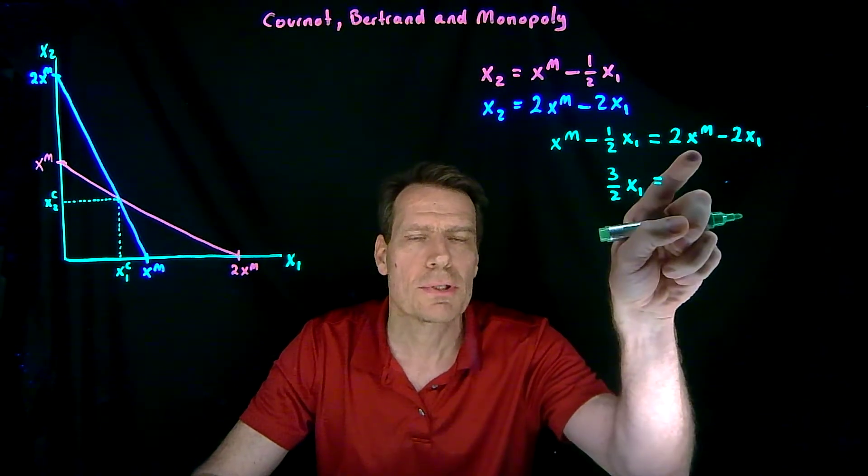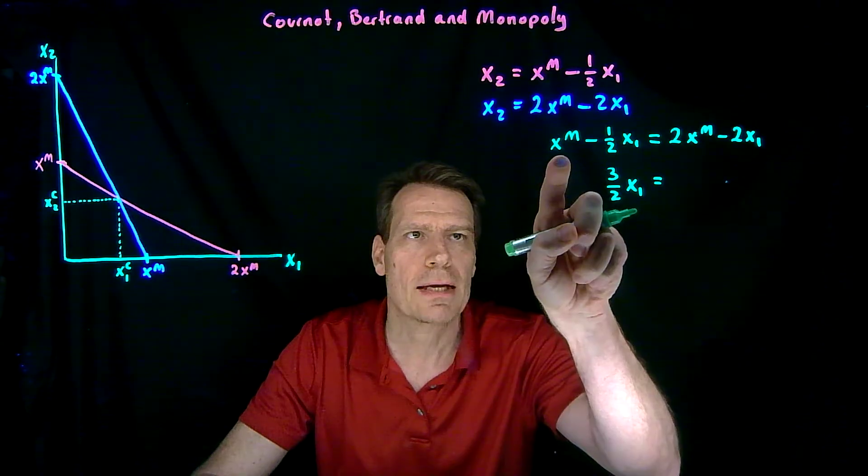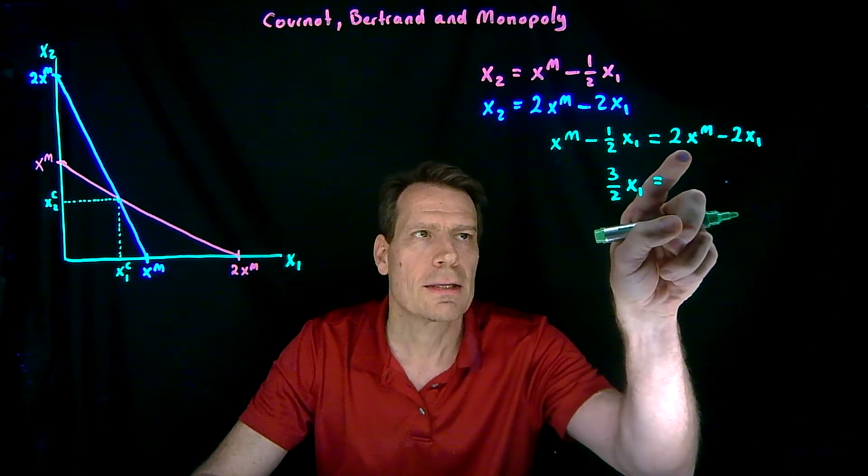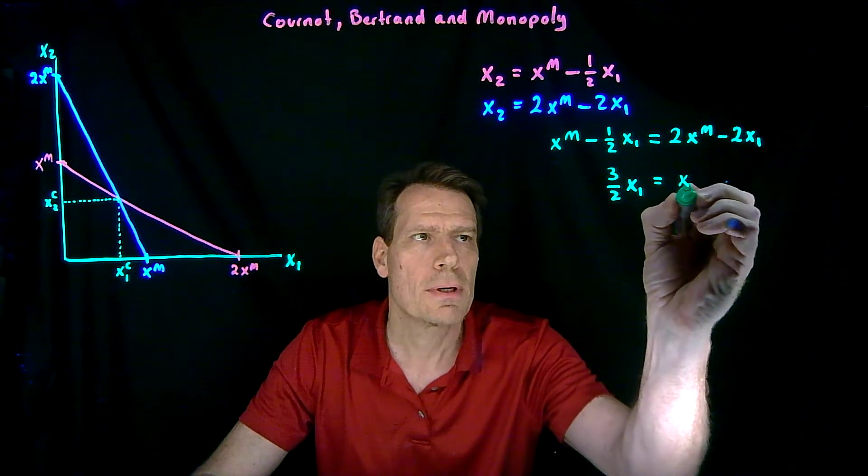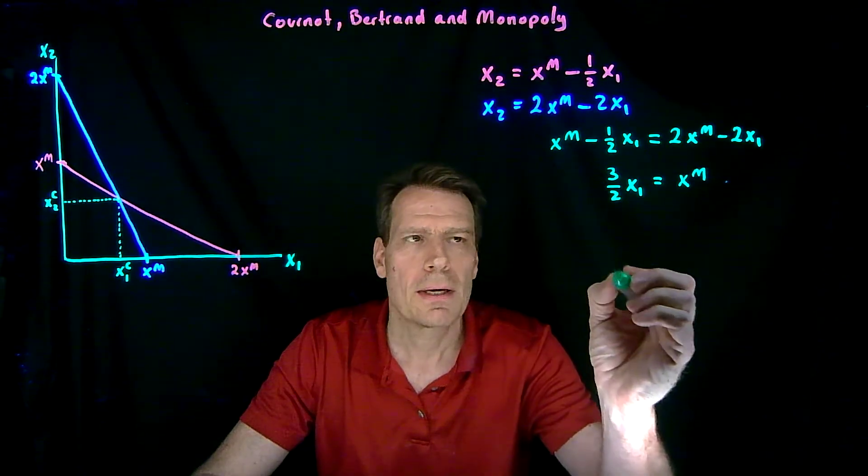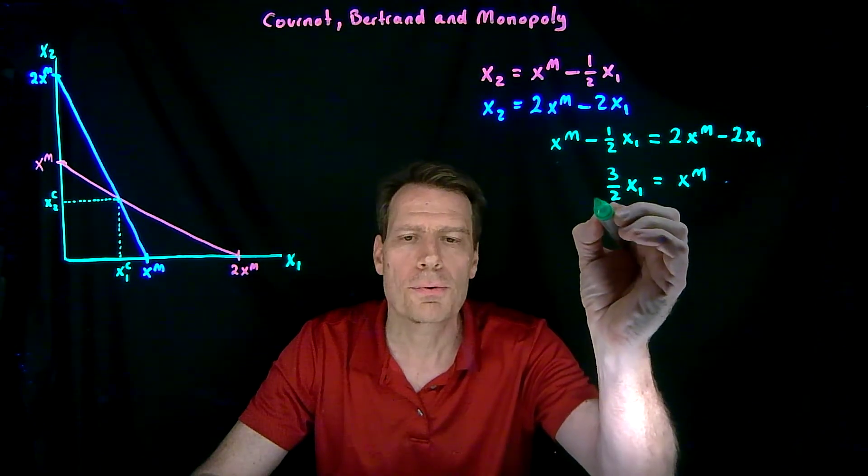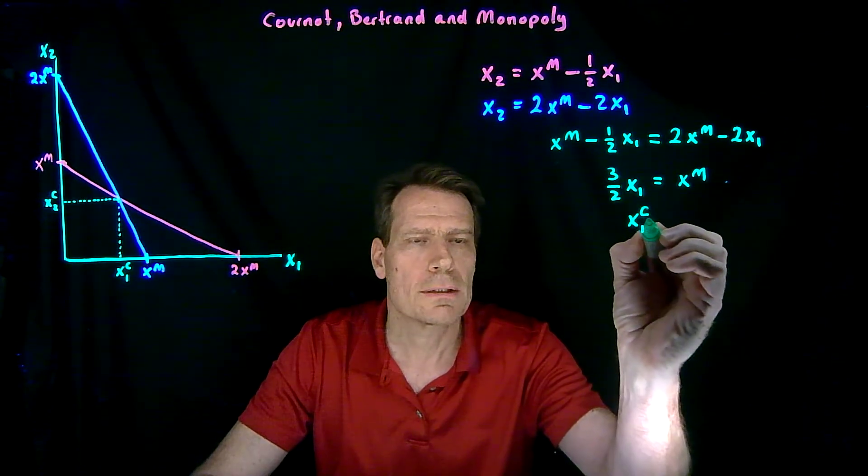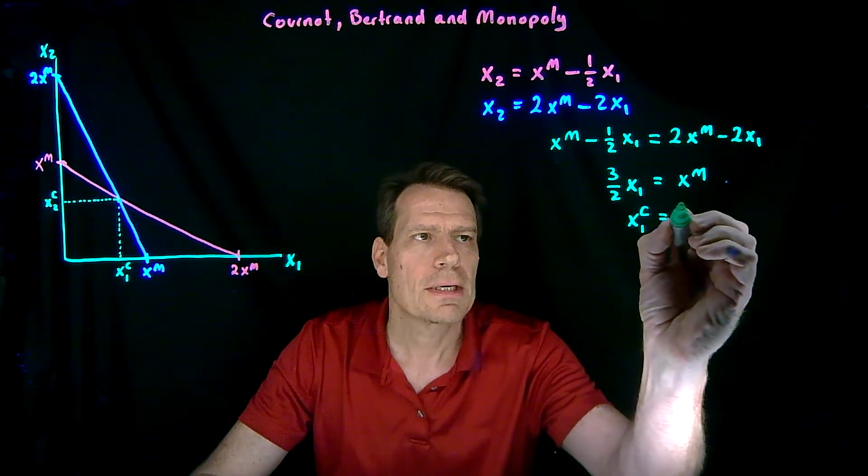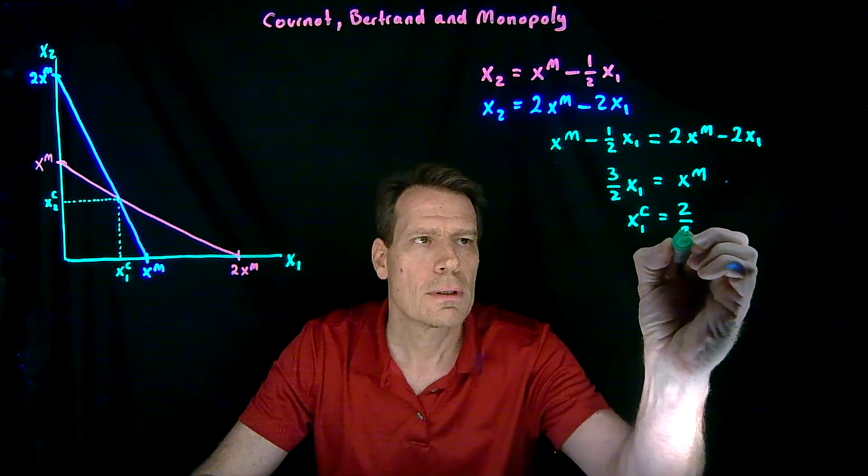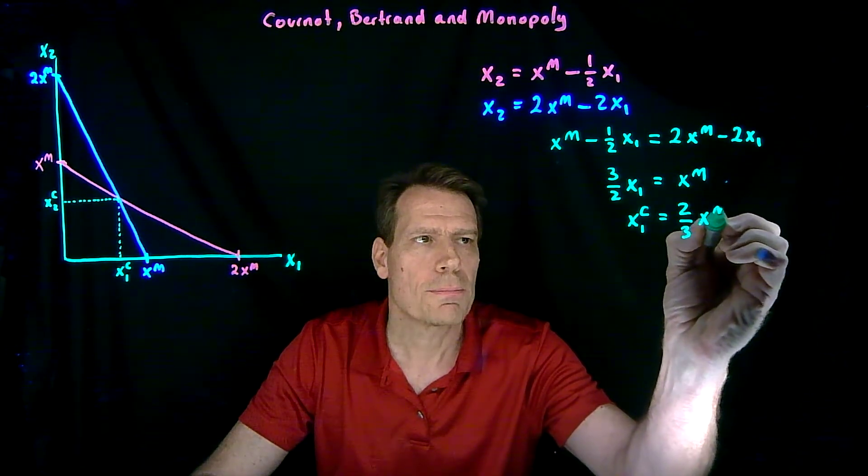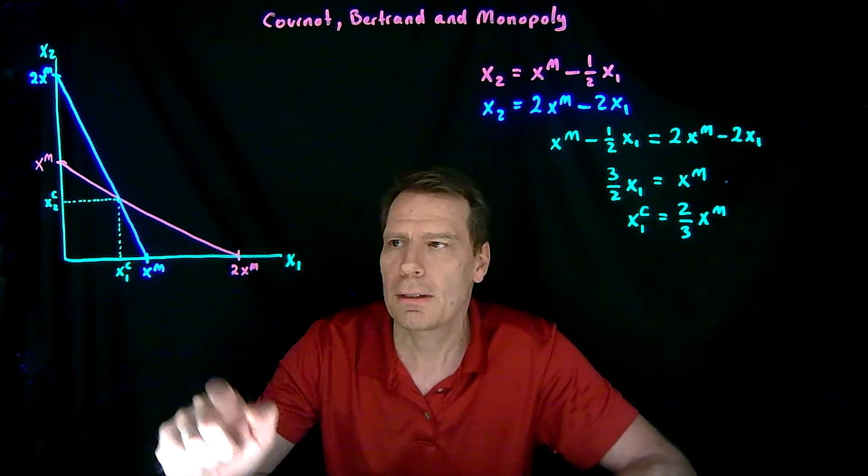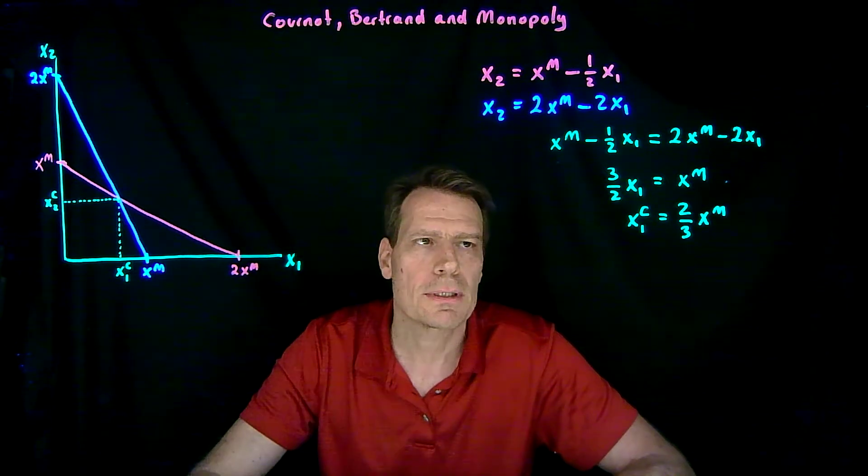And we collect the xm's on the other side, so we subtract xm from both sides, and that'll leave us with just xm on this side. Then we multiply through by 2 thirds to get x1, the Cournot quantity for firm 1, being equal to 2 thirds times xm. 2 thirds the monopoly quantity, so less than the monopoly quantity.